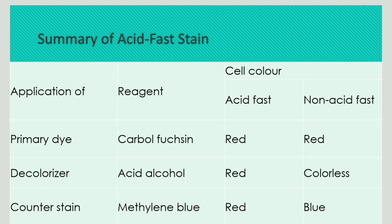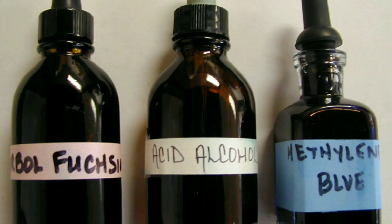Now let us discuss the summary of acid-fast staining. Acid-fast staining uses three reagents. First, carbol fuchsin, which is the primary dye — both acid-fast and non-acid-fast bacteria take up red color. Second, acid alcohol, which is used as a decolorizer — acid-fast bacteria retain red color, whereas non-acid-fast bacteria lose the red color and become colorless. Third, methylene blue, which is the counterstain — acid-fast bacteria remain red, while non-acid-fast bacteria appear blue.